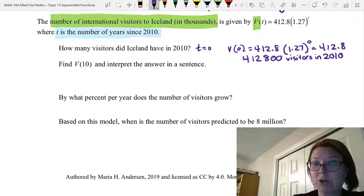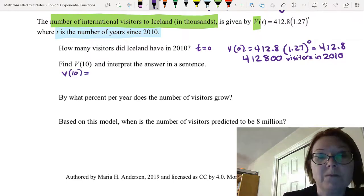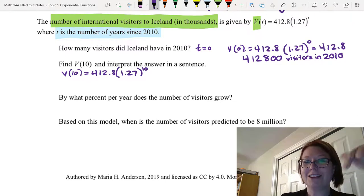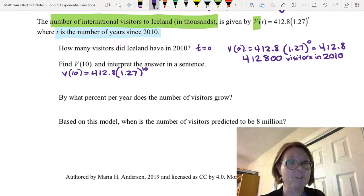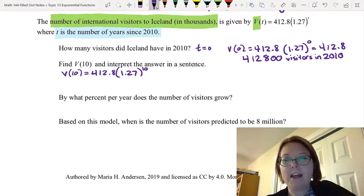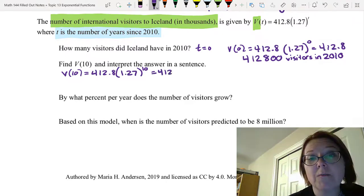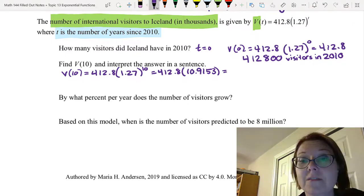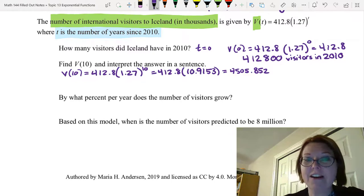Okay, let's find V(10) and interpret that in a sentence. So V(10) would be 412.8 times (1.27)^10. Now what do we do first? Do we do 412.8 times 1.27 or 1.27 to the 10th power? Well, if you think back to order of operations, it's parentheses, then exponents, then multiplication and division. So we want to do the 1.27 to the 10th power first. And that gives us 10.9153, and I'm rounding there. So 412.8 times 10.9153. And then multiplying that times 412.8 gives us 4,505.852. Again, I'm rounding and now I've got to interpret the answer in a sentence.